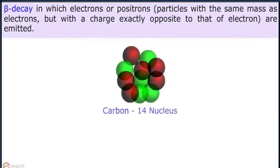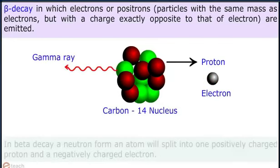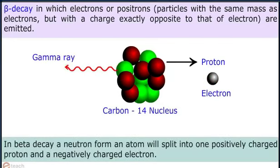Now let us study beta decay, in which electrons or positrons — particles with the same mass as electrons but with a charge exactly opposite to that of an electron — are emitted. During the conversion, gamma decay also takes place. In beta decay, a neutron from an atom will split into one positively charged proton and a negatively charged electron.